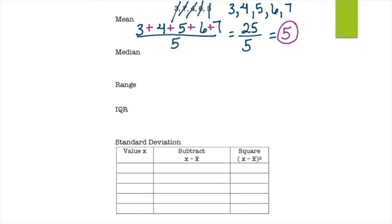For the median, list from least to greatest and cross out one from each side — left, right, left, right — leaving one number in the middle. There's no extra math needed. The median is 5.